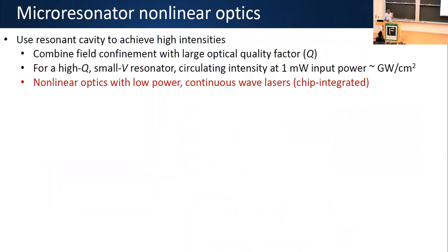We typically don't just work in waveguides — we work in micro resonators. For example, take one of these waveguides and wrap it into a ring. The basic reason is to take advantage of resonant enhancement and high cavity quality factors. Together with strong field confinement, you can get very large circulating intensities — on the order of a gigawatt per square centimeter — even for continuous wave input fields on the order of a few milliwatts. This is consistent with using compact chip-integrated lasers to really access the nonlinear response of the materials.